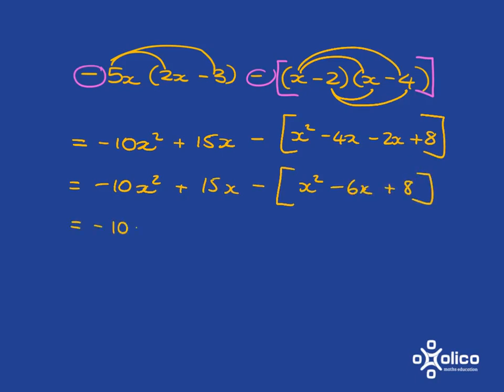I then just combine my like terms here and I'm going to get x squared minus 6x plus 8. Now I'm going to deal with that minus sign because that minus sign has to go with absolutely everything that's in here. So I'm going to have minus x squared. Then the minus goes with this minus. Minus times minus is plus 6x. Minus with this 8, minus 8.